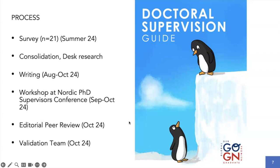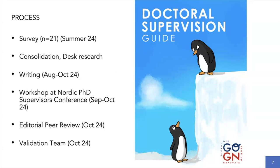In terms of the process: earlier in the summer — maybe late spring — we sent out a survey. We had 21 people who responded, of whom 11 were supervisors as well as doctoral students. We asked them in two sections: one aimed at people who experienced supervision as the student, which applies to everybody, and one for those who also supervise. Over the summer, this was used to build a small base of themes and key questions. Then we did some desk research, started drafting, and started pulling it all together.